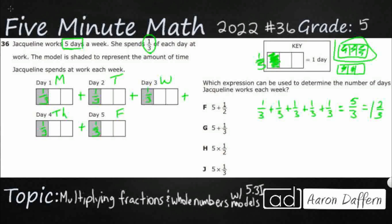Looks like I've got one whole and then two-thirds left over. But I don't see repeated addition as an answer choice — this works, but it's not listed. We should be thinking: repeated addition is going to be the same as multiplication.